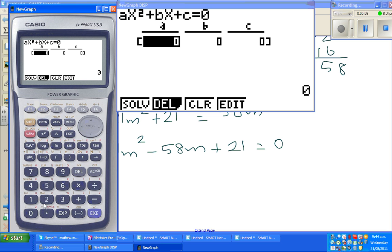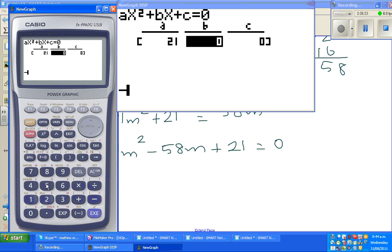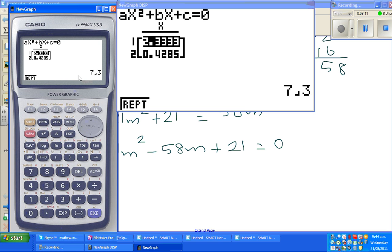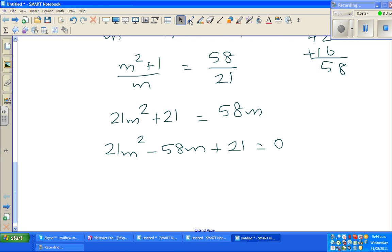So this is a second degree polynomial. Your A is the coefficient of m squared, which is 21, then you got a minus 58 there, and a 21 there again. So then solve it. This is 7 thirds, so one answer is 7 thirds, and the other answer is 3 sevenths.